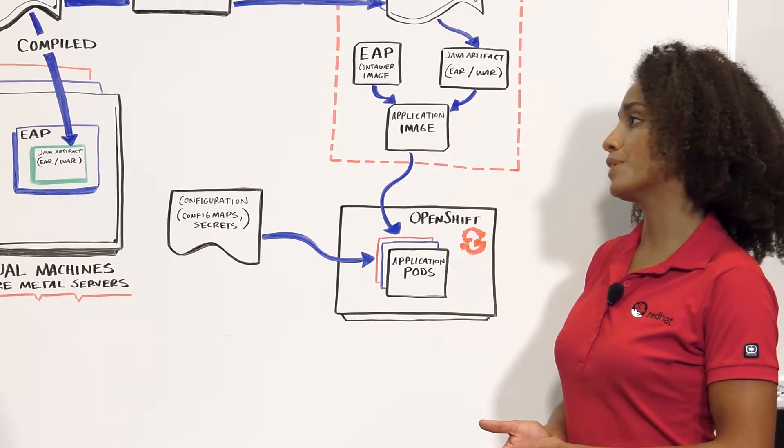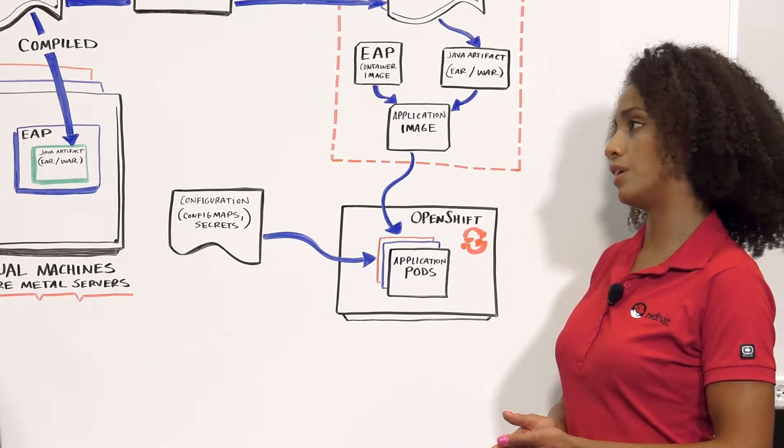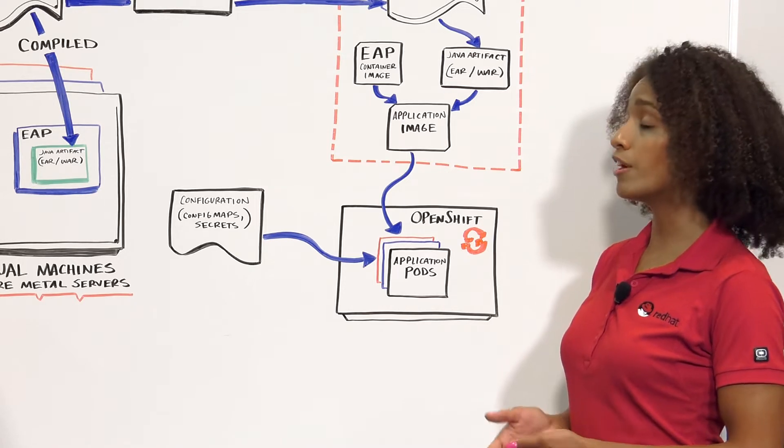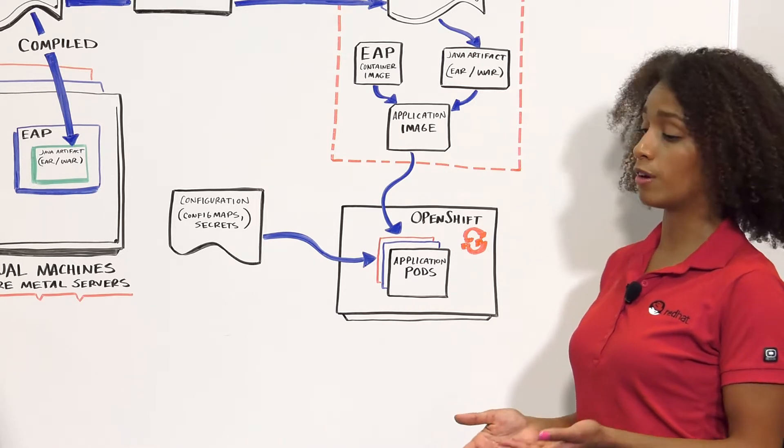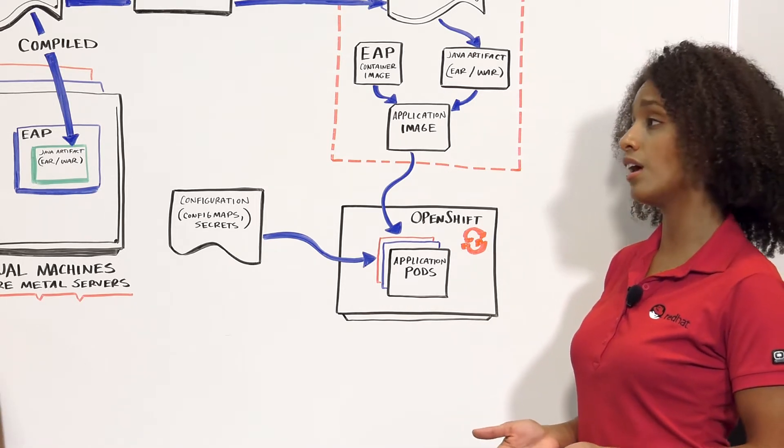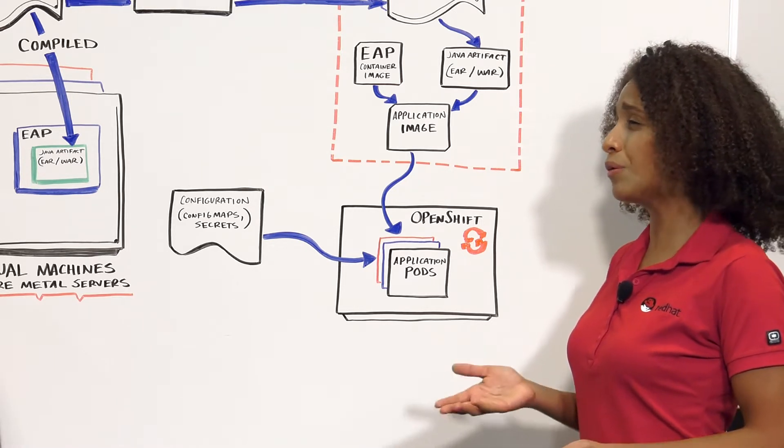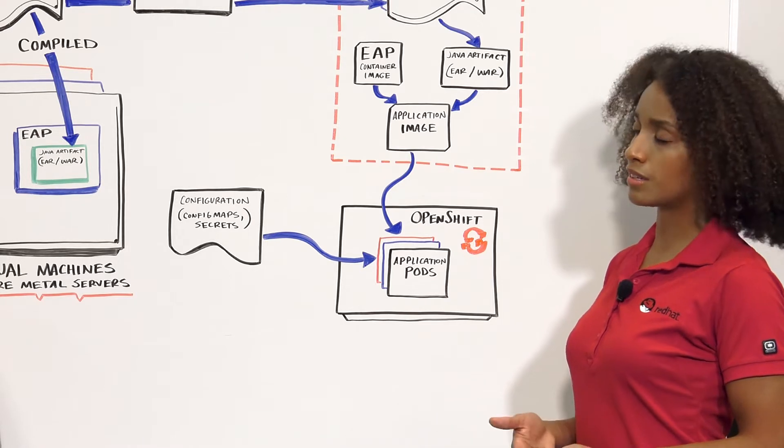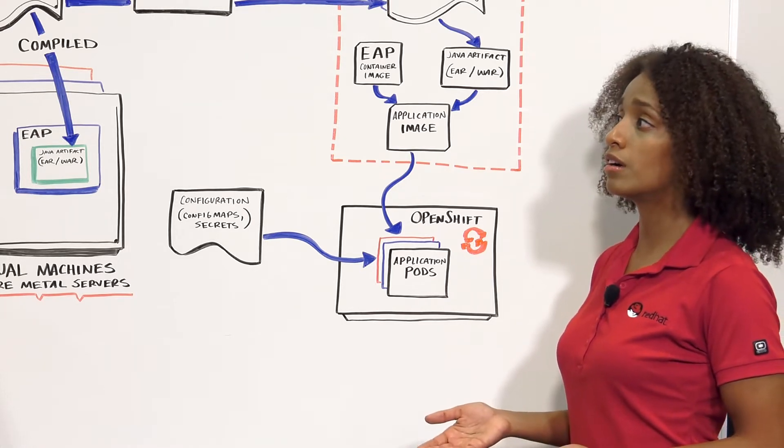So Derek, I have an existing application on JBoss EAP, but I want to modernize it by moving it to the cloud. I've heard that Red Hat OpenShift is a great solution offering load balancing, horizontal scaling, and great CI-CD support, but we don't have time to redevelop it for OpenShift. Is there a way to use our existing application and app server on OpenShift?